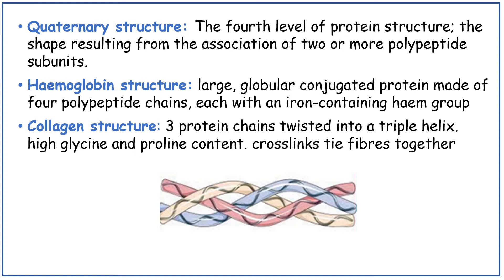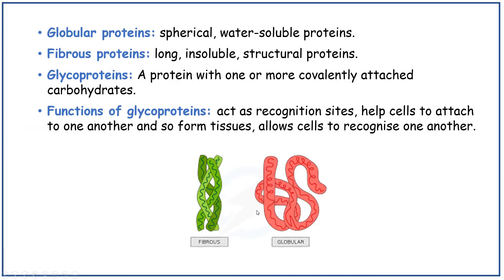Haemoglobin structure is a large, globular, conjugated protein made of four polypeptide chains, each with an iron-containing heme group. Collagen structure: three protein chains twisted into a triple helix, with a high glycine and proline content and cross-links tying the fibres together via hydrogen bonds between the fibres. Globular proteins are spherical, water-soluble proteins. Fibrous proteins are long, insoluble, structural proteins.